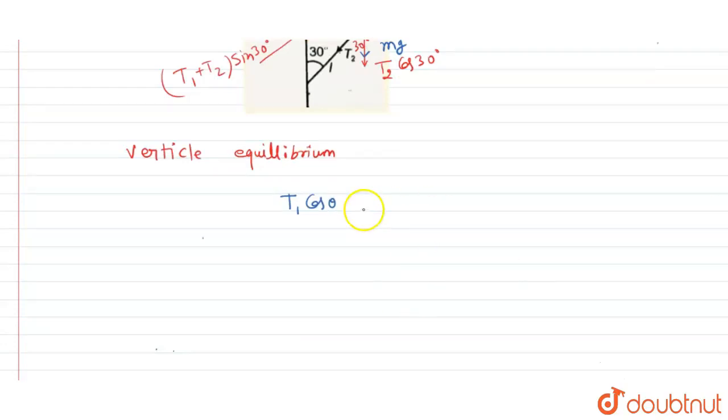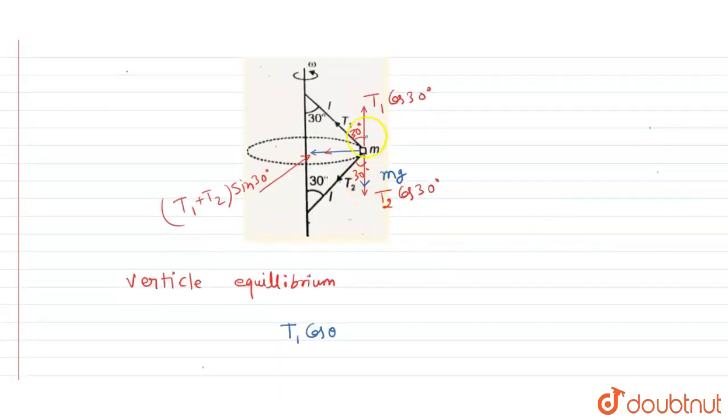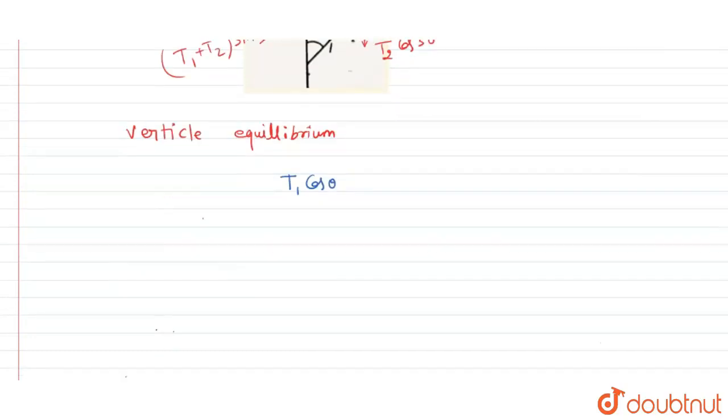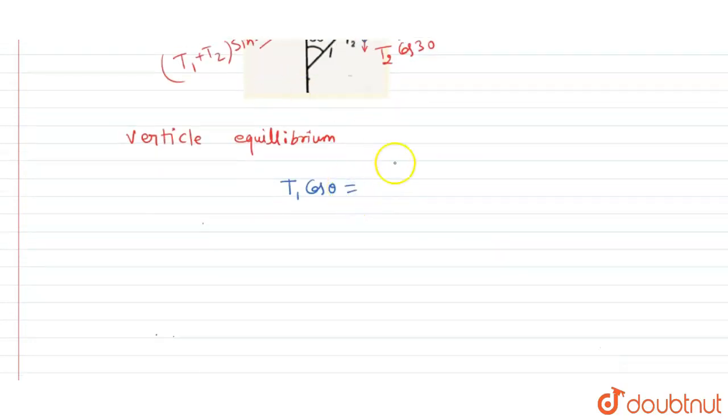So we can write here, for vertical equilibrium, total force in upward, net force acting on this block in vertical direction will be zero. So here I can write, this can be written as mg plus T2 cos of 30.